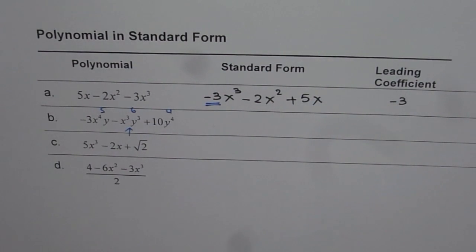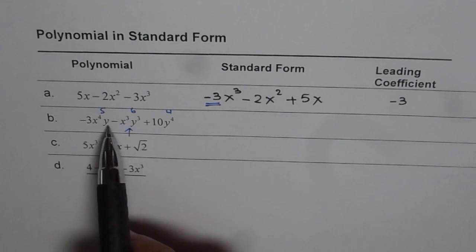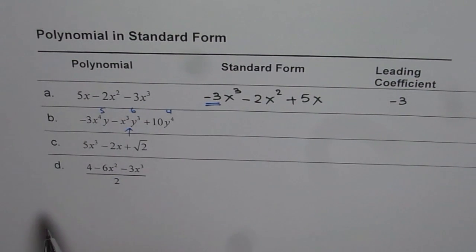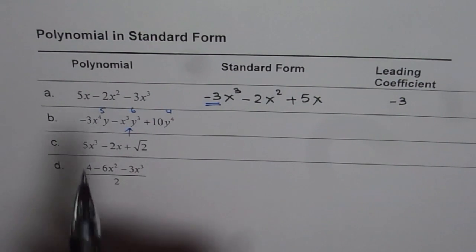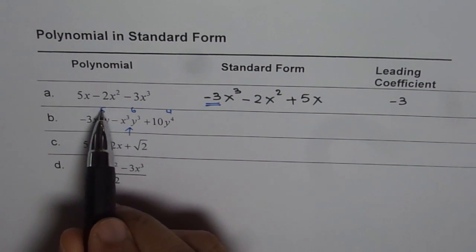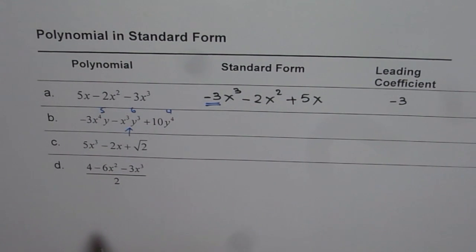Whenever you have multiple variables, you need to find the number of factors of variables to figure out the degree of each term, or you can add the exponents of variables. So we added 4 and 1 to get 5, 3 and 3 to get 6, and 4 for y.